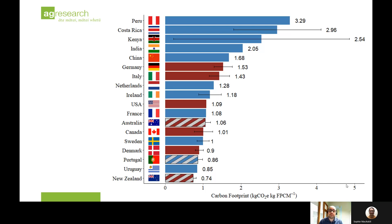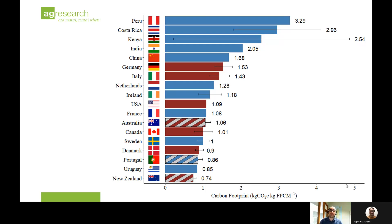When performing the recalculation, we noticed that the allocation factor was the main driver of the results. The red bars represent studies that used biophysical allocation, so we didn't have to recalculate the allocation for those — providing a more direct comparison. In the report, we extend this analysis to show the differences when changing from energy allocation or economic allocation to biophysical, and the impact that had on the recalculation. Australia, Portugal, and New Zealand are marked with hatched bars.